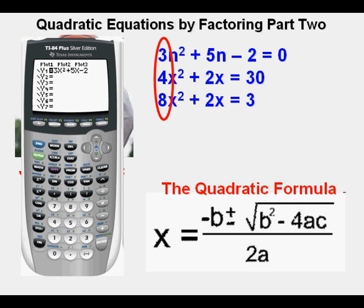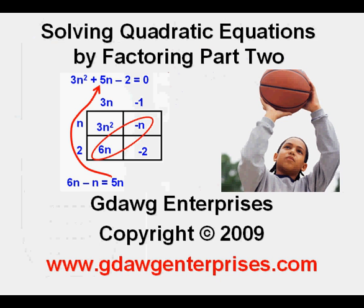Solving by factoring when the A in standard form is different from 1 involves more complexity. There are also other methods besides the box method for factoring, such as the diamond method, bottoms up, and others — try to find a method that works for you. Factoring this kind of trinomial requires patience and flexibility. If you cannot find solutions by factoring or are unsure, Joe recommends using the quadratic formula. Solving by graphing with a graphing calculator is also a great option. This has been Solving Quadratic Equations by Factoring, Part 2.